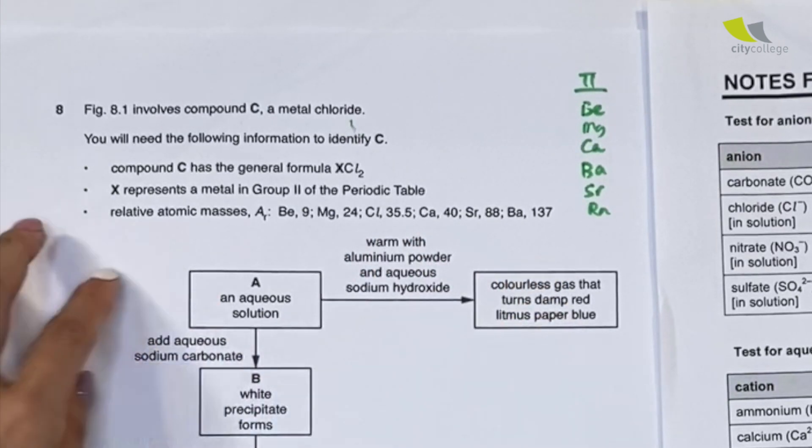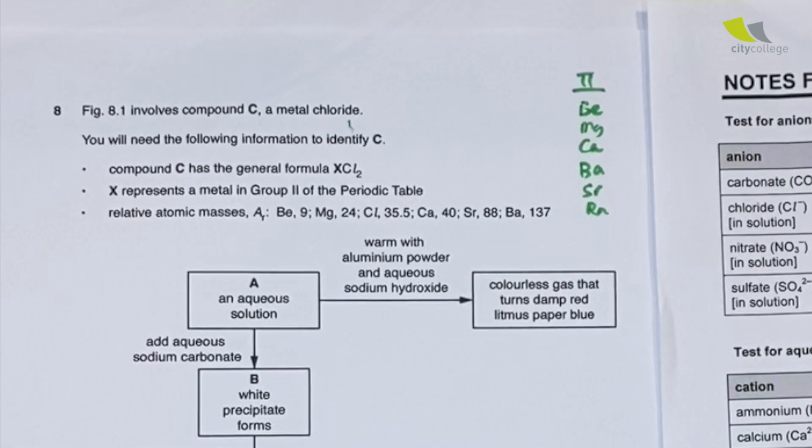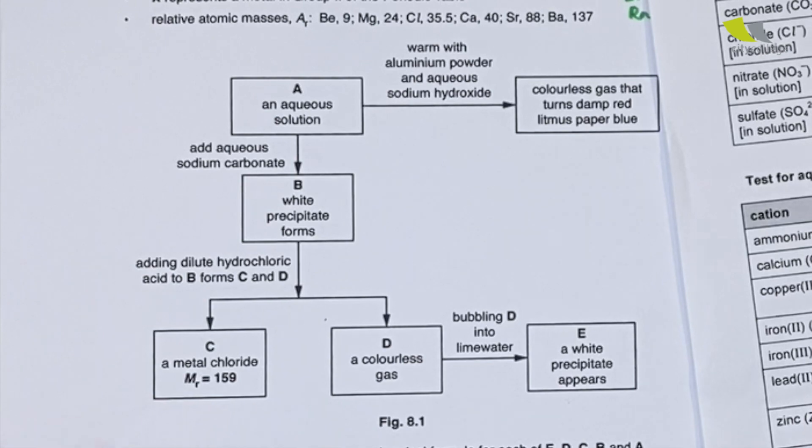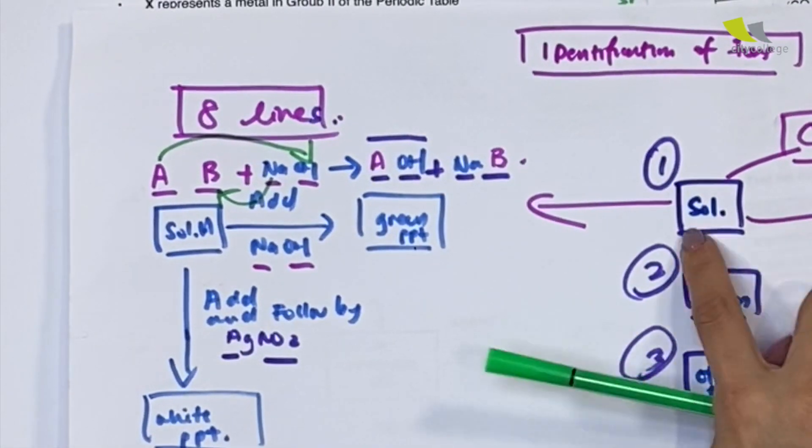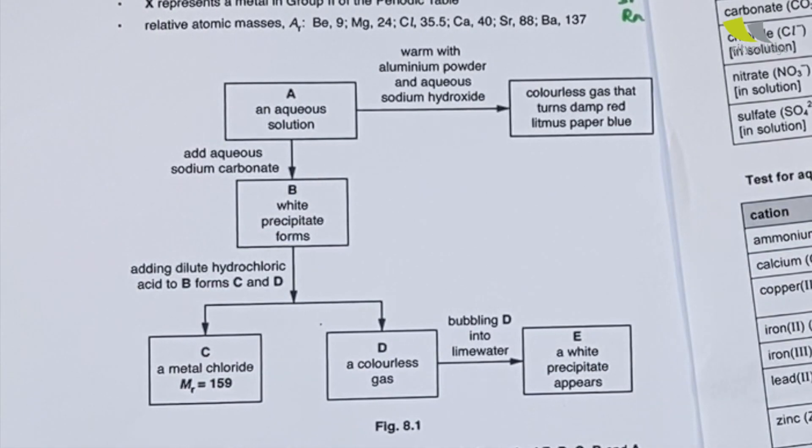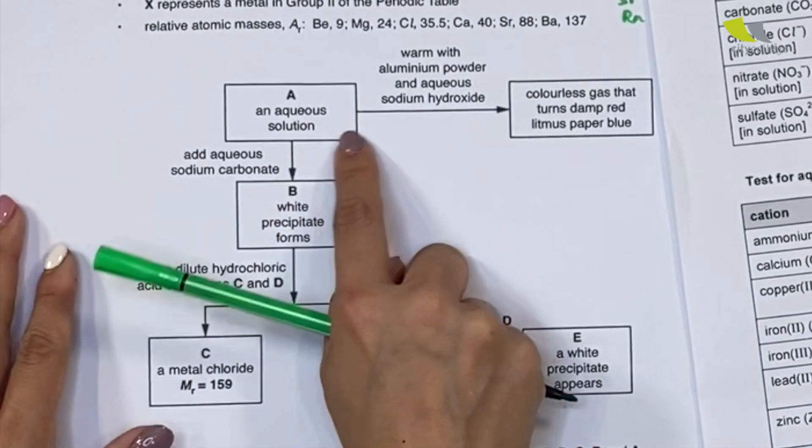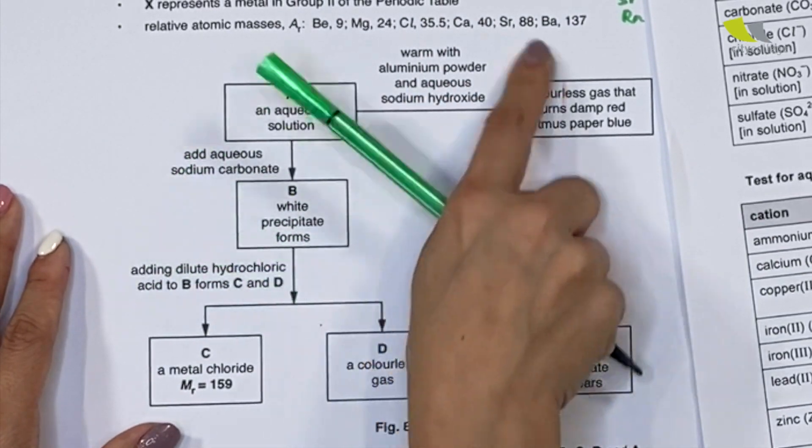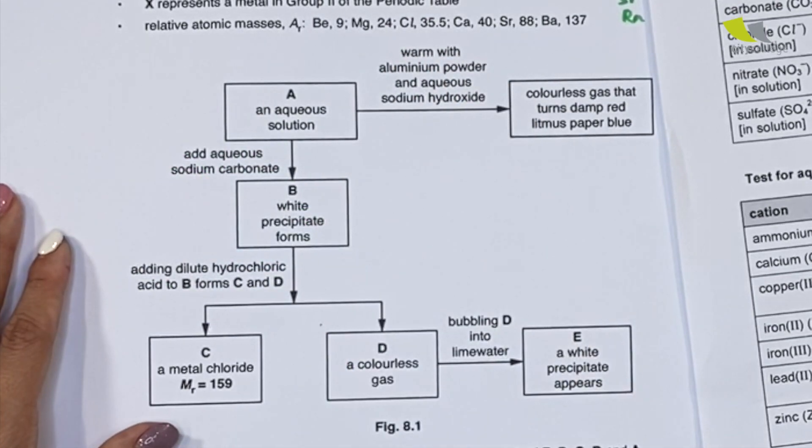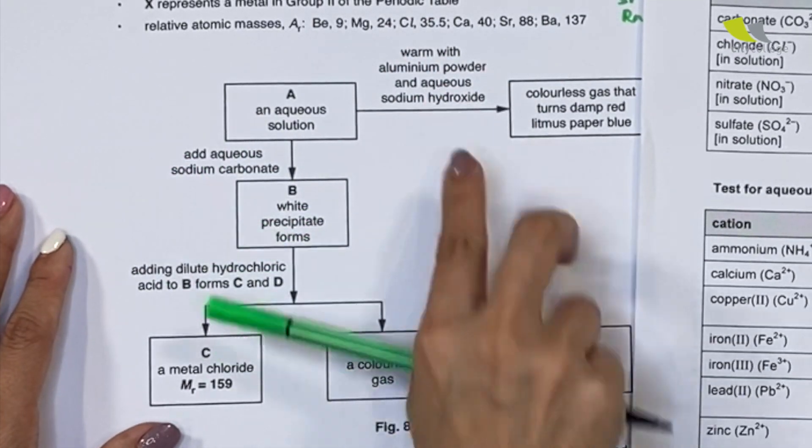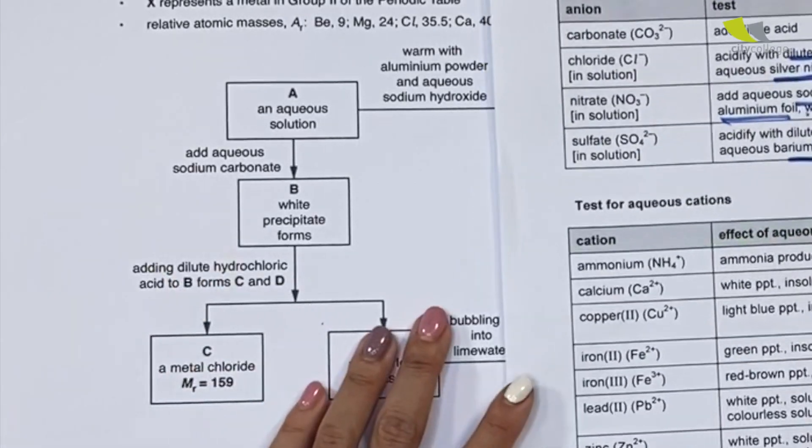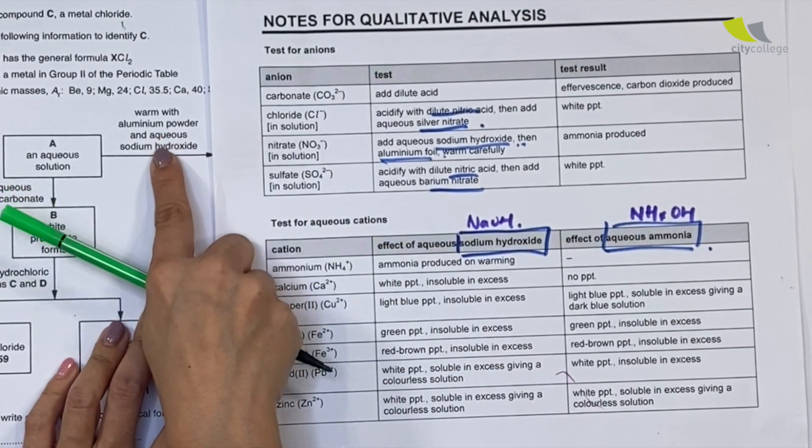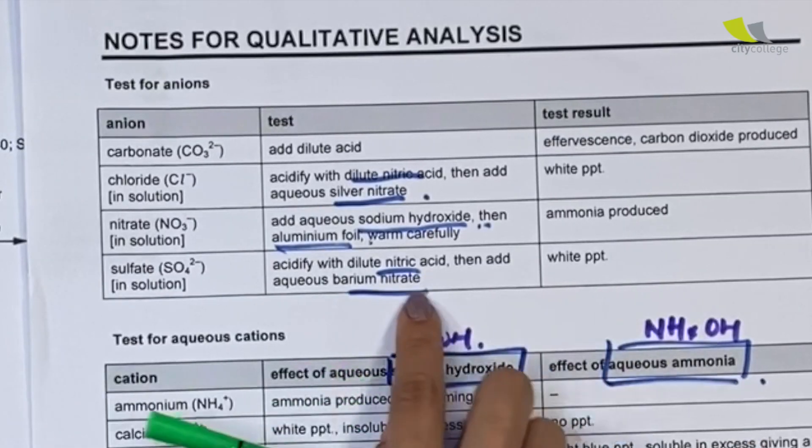Let's move on to look at the question. An aqueous solution—remember I say in order to solve it we always look for the solution. This seems to be the first clue that I have. They say warm with aluminum powder and aqueous sodium hydroxide. This is a good clue because it gives me something using my table.